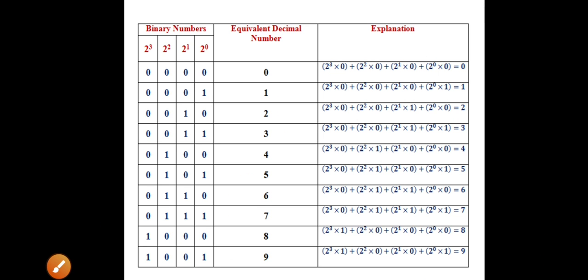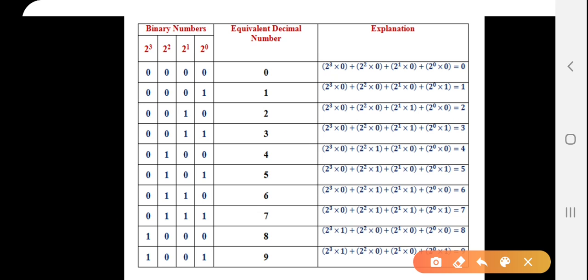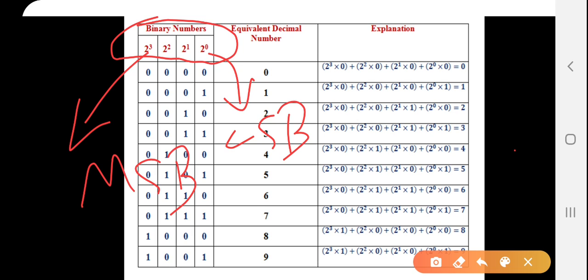So here is the table for converting the particular binary number into decimal number. As you can see, these are the bases of binary. 2 to the power 0 is basically representing LSB part of binary and 2 to the power 3 is basically representing MSB part. LSB stands for least significant bit and MSB stands for most significant bit. If you want to convert this number, that is 11000 into decimal, you need to multiply bit by bit with its corresponding weight.